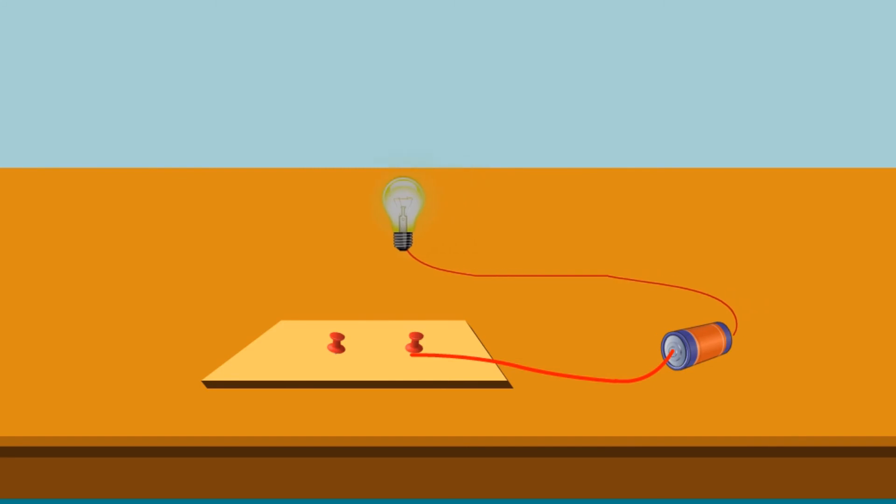Now connect one of these wires to one terminal of the bulb and the other wire to one of the board pins. Take a safety pin and attach it to one of the board pins. Now take a new electric wire and attach its one end to the free terminal of the bulb. Attach the other end to the board pin which is not joined to the cell. You will notice that the bulb does not glow.